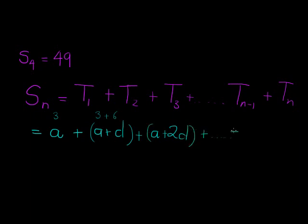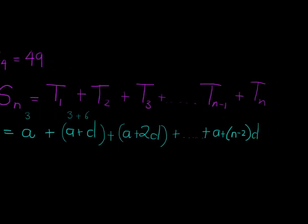This goes on. Eventually here I get a plus—now look, when I was at term 3 I added two d's; at term 2 I added one d; at term 1 I didn't add any d's. So when I'm at term n-1, I will add n-2 d's, and at this last term will be a + (n-1)d.